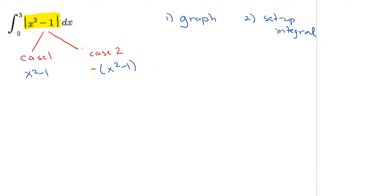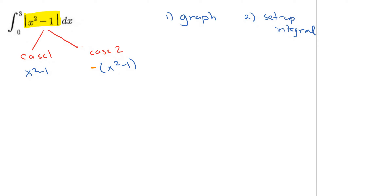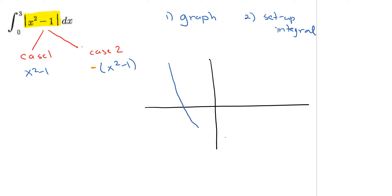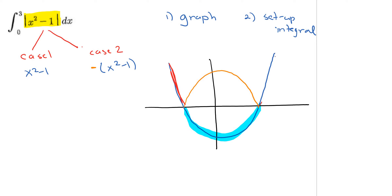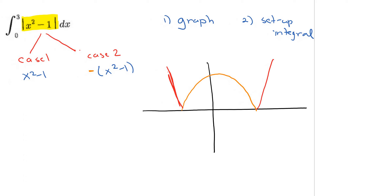I always start with the original function inside the absolute value, which is y = x squared minus 1. When you take the absolute value, you take the part of the graph that's underneath the x-axis and reflect it across the x-axis. So this part remains the same, that part remains the same, and you draw over the reflected bottom piece. There is the absolute value of x squared minus 1, with key values at −1, 0, and positive 1.